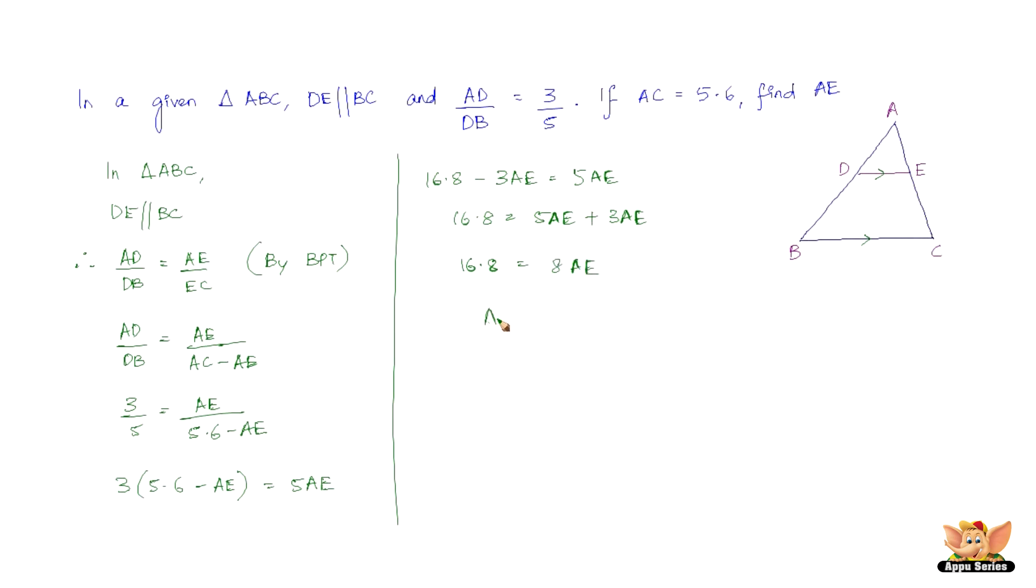So we've got AE = 16.8/8, which is nothing but 2.1 centimeters. So we found AE to be equal to 2.1 centimeters using the concepts of basic proportionality theorem. So let us solve more problems based on this concept in the forthcoming videos.